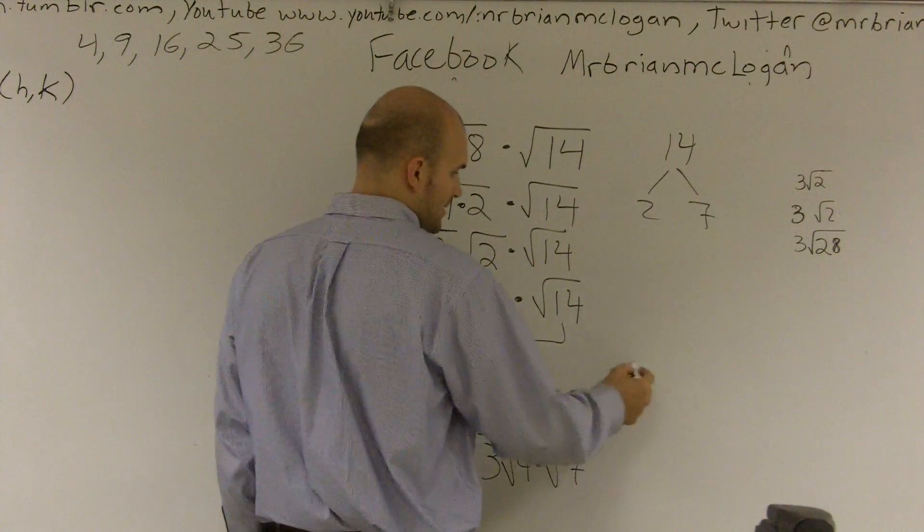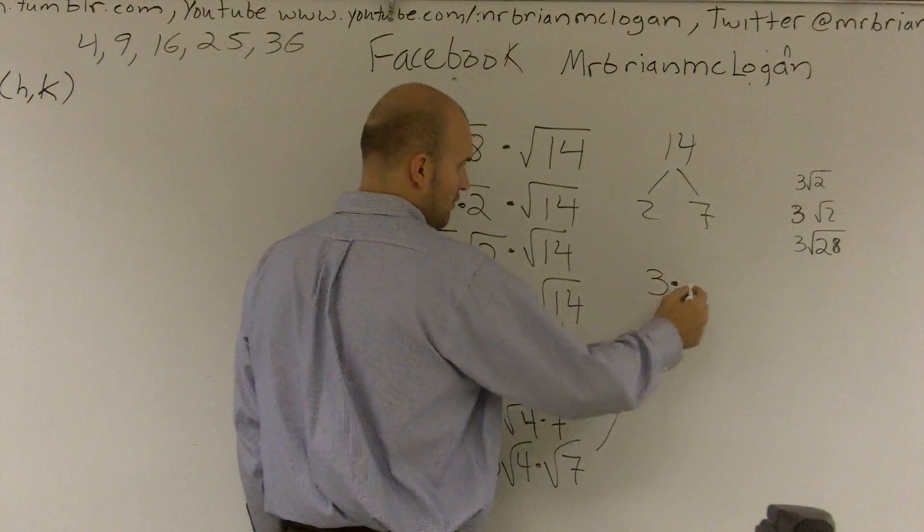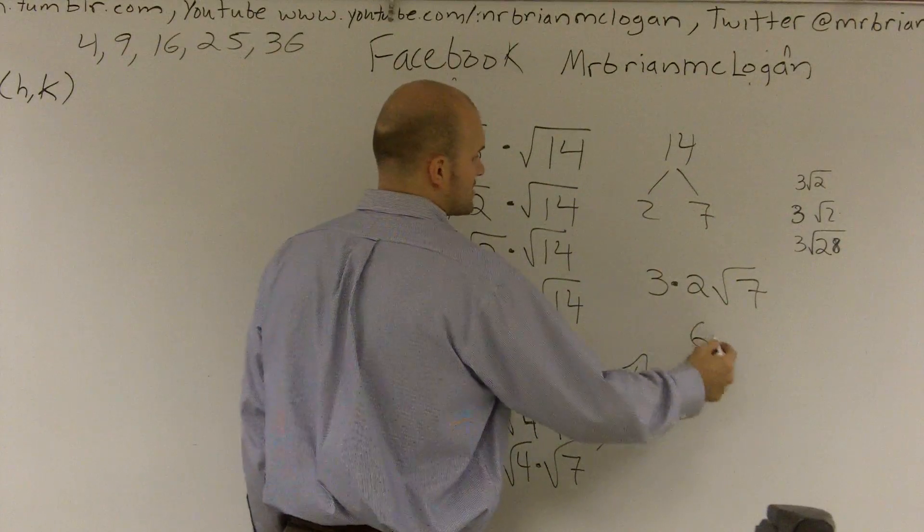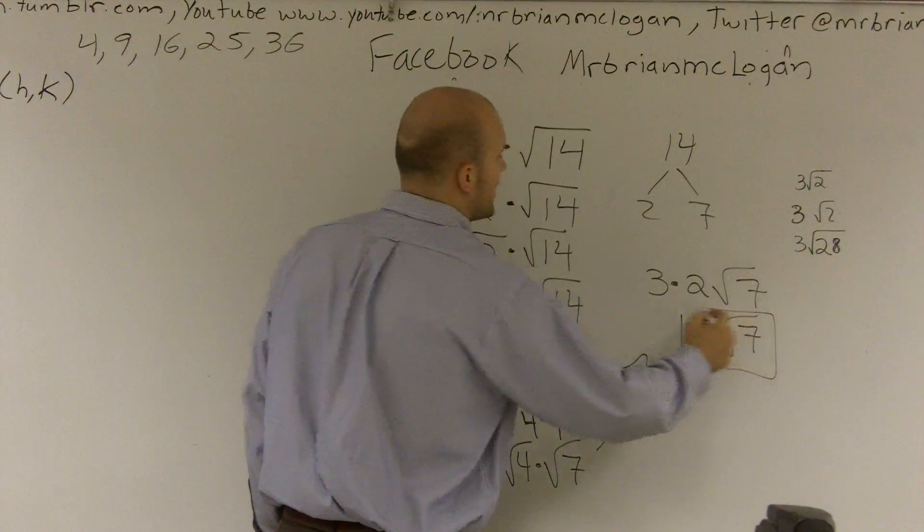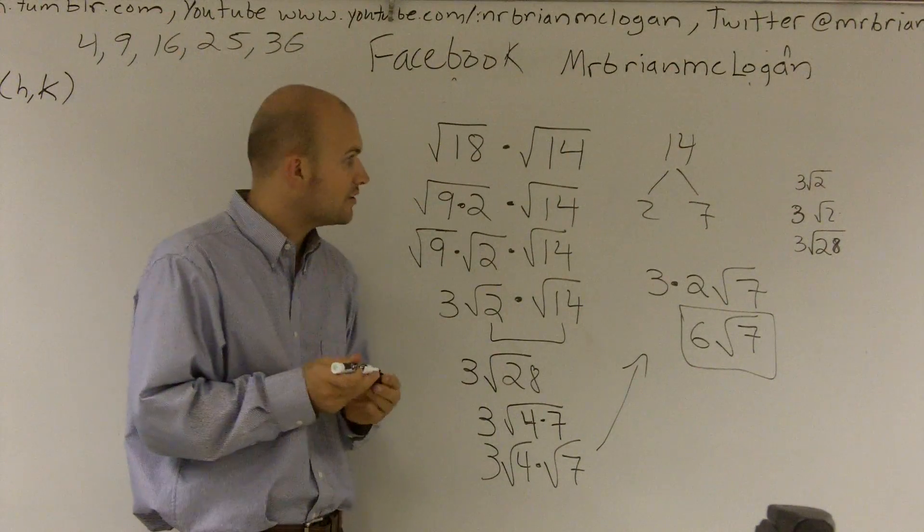And I can split that up into 3 times radical 4 times radical 7. And if you don't mind, I'm just going to move this all up here. So it's 3 times the square root of 4, which is 2, times radical 7. 3 times 2 is 6, radical 7. And that will be your final answer as simplifying the square root of 18 times the square root of 14.